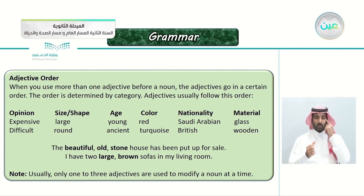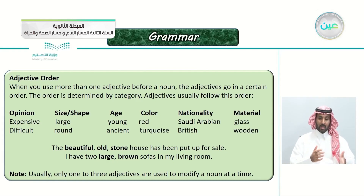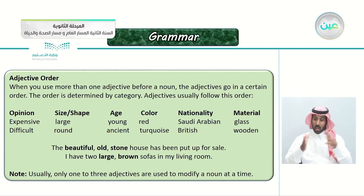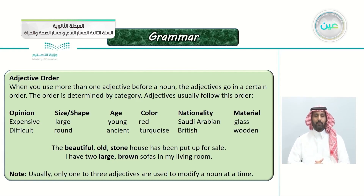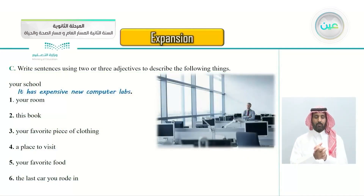When you use more than one adjective before a noun, they go in a specific order determined by category: first opinion (e.g., expensive, difficult), then size or shape (e.g., large, round), then age (e.g., young, ancient), then color (e.g., red, turquoise), then nationality (e.g., Saudi, British), then material (e.g., glass, wooden). For example: 'the beautiful old stone house' — beautiful is opinion, old is age, stone is material, house is the noun.